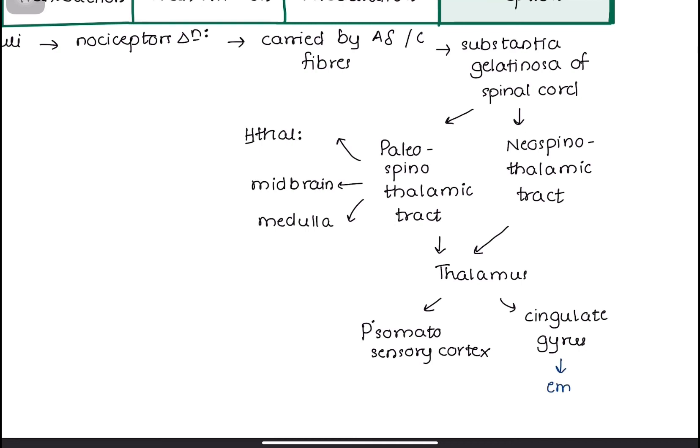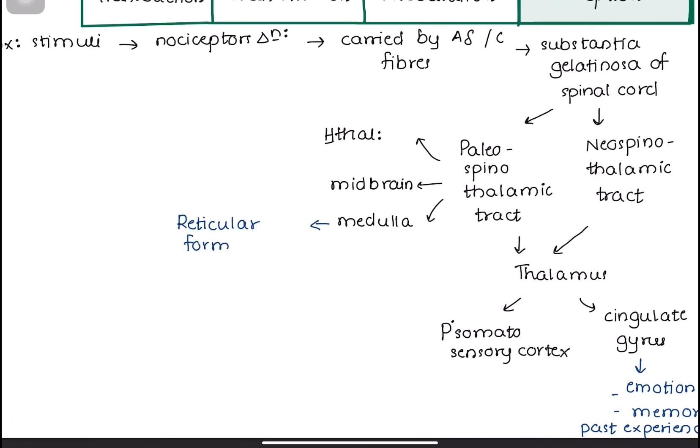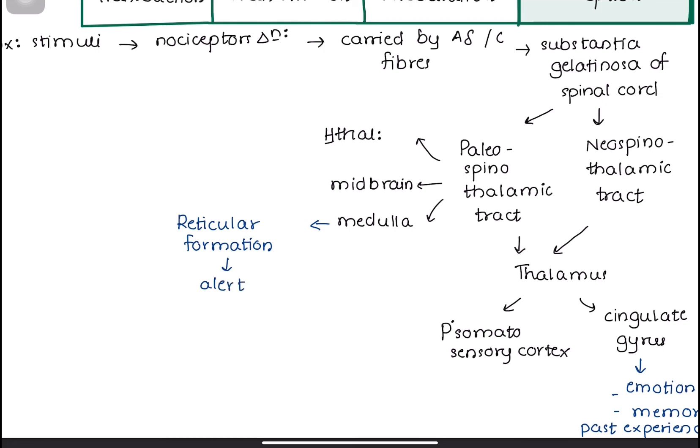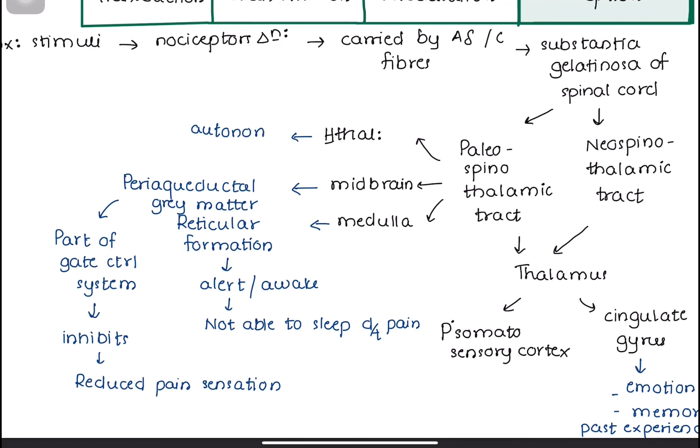Cingulate gyrus plays an important role in emotions and memory, so it triggers negative emotions like fear, sadness, and stores them as bad memories due to pain. Pain signals in the reticular areas of the medulla activate the alert system. This explains why a person is unable to sleep when he or she is in severe pain. Fibers in periaqueductal gray area of the midbrain are responsible for gate control theory, which was already discussed before. Pain signals activate the autonomic responses in the hypothalamus. That's why we suffer sweating and palpitations during pain.